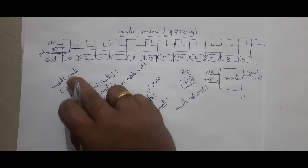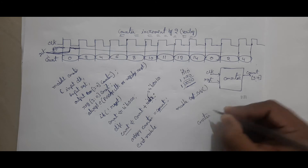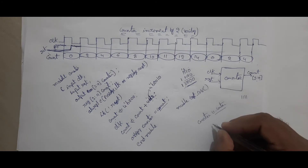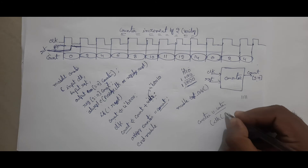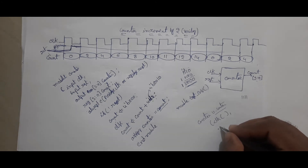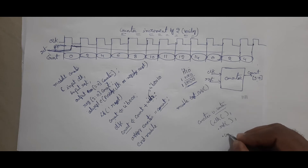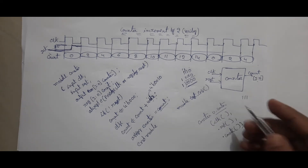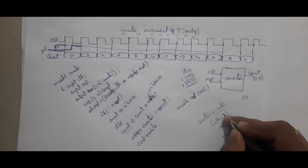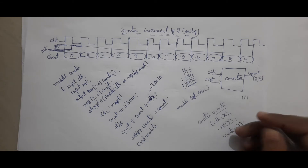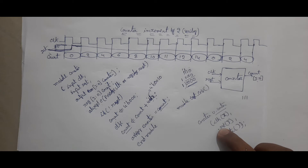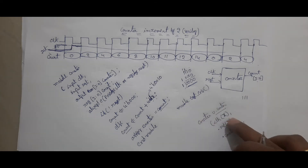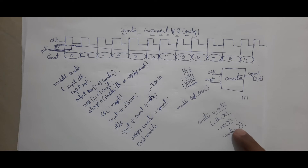The module definition is counter. I am writing: counter u_counter (.clk(), .reset(), .counter(), .counter()); — this is the counter instantiation. If you put X here, what you give X will pass to clock; if you put Y here, what you give Y will go to reset. If you drive X from the test bench, the same thing goes to clock; what you drive at Y goes to reset.